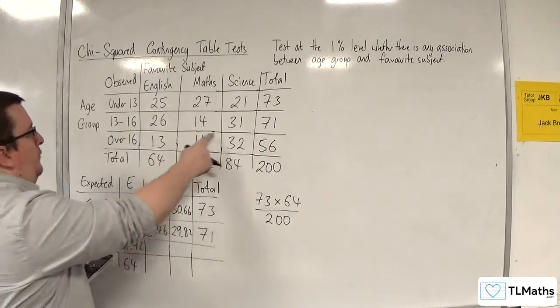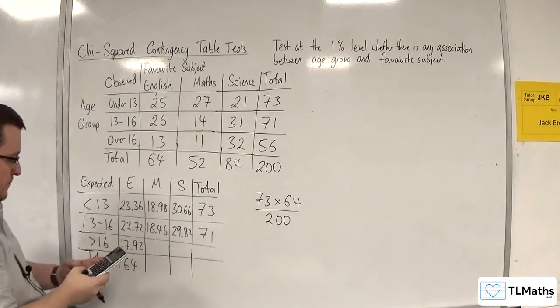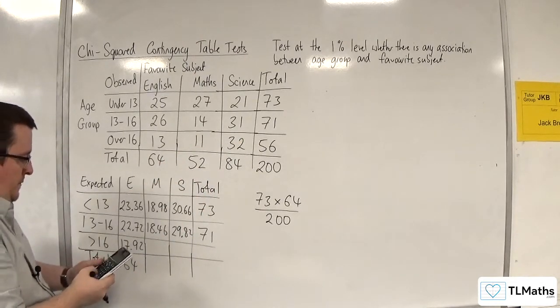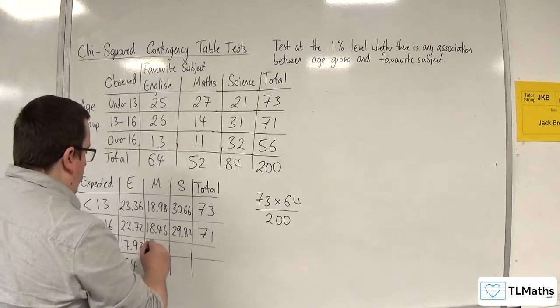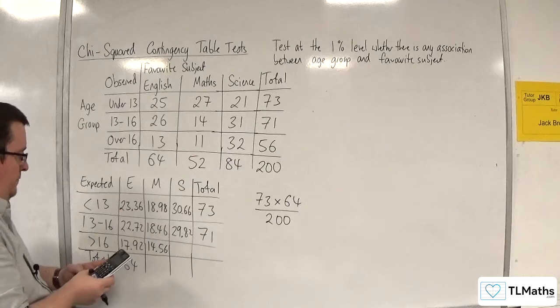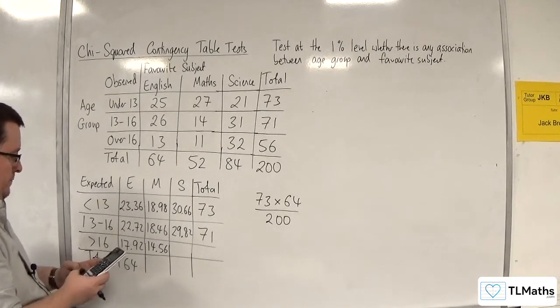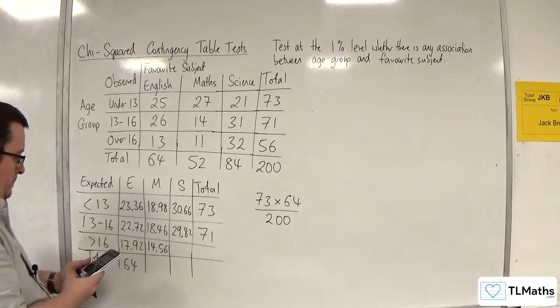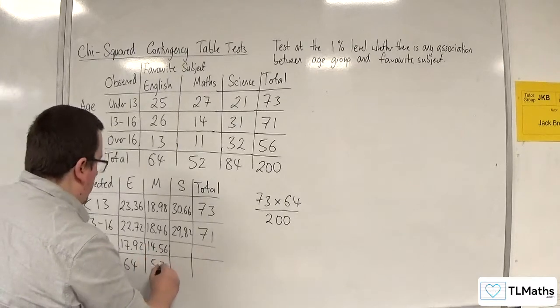Right, let's go for this one then. So that's 56 times 52 divided by 200. So that's 14.56. Let's add up that column. 52, which matches that one.